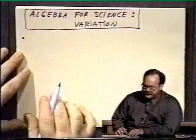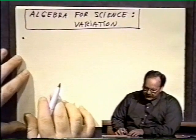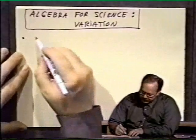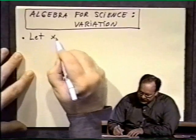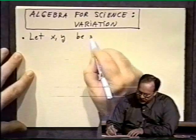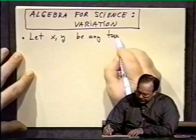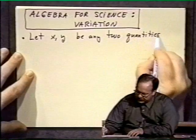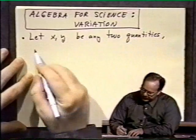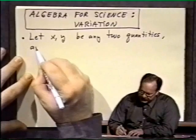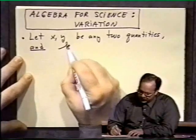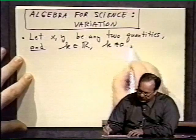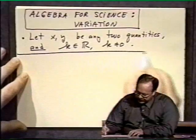In science — any of the sciences, physics, chemistry, et cetera — you're talking about various quantities in algebraic expressions. So let x and y be any two quantities. And let's take a real number k, where k is a non-zero real number.